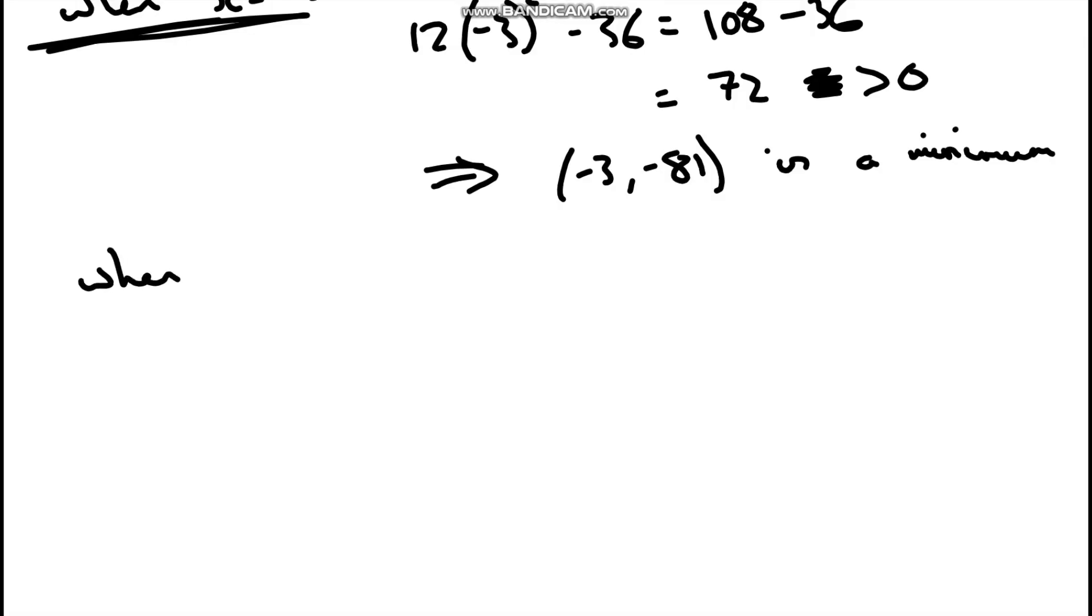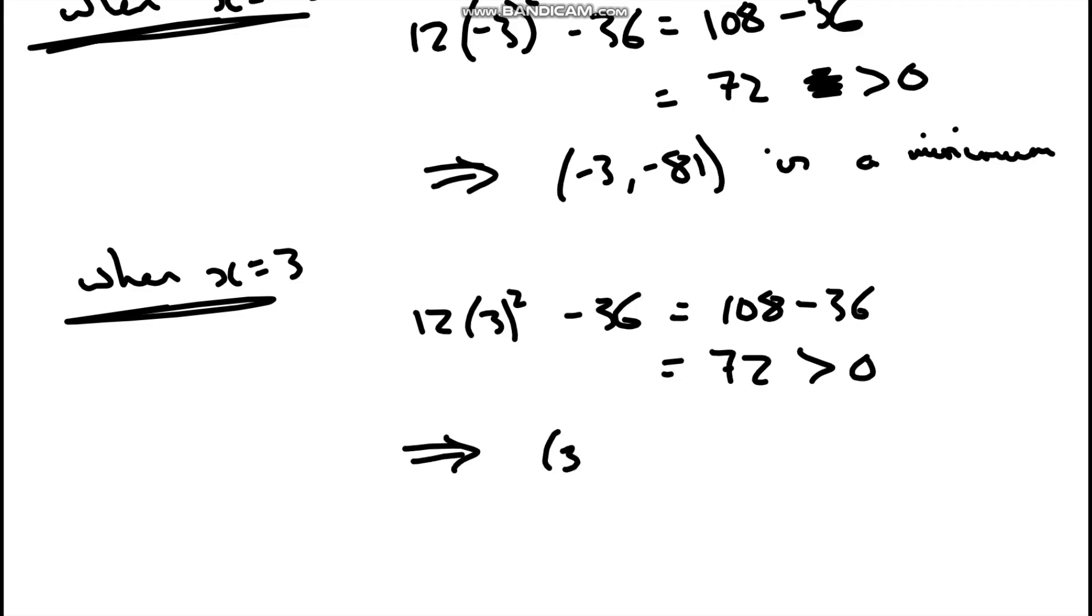We're going to have when x equals positive 3, we're going to have 12 lots of positive 3 squared take away 36. We're going to have 108 take away 36, which is 72 again. This is still greater than 0. So it's going to tell me that positive (3, -81) is a minimum.